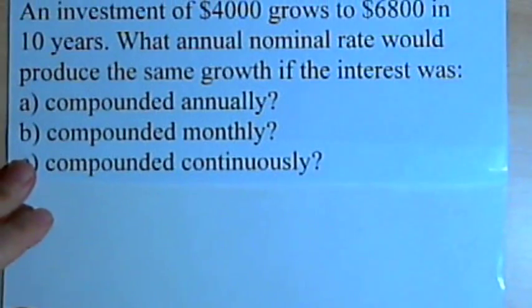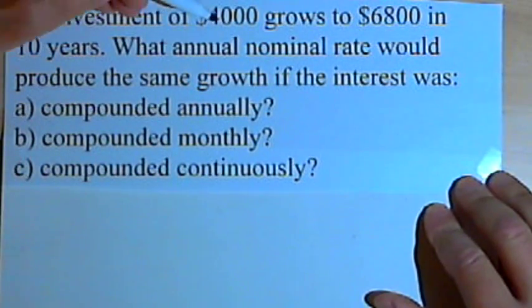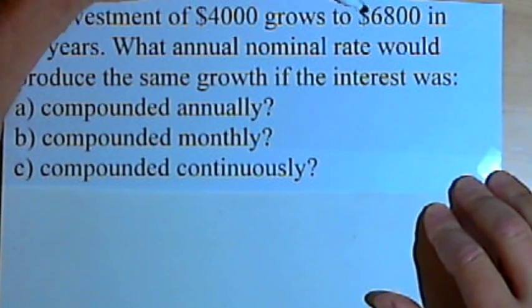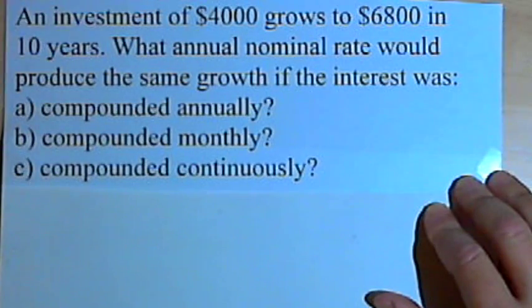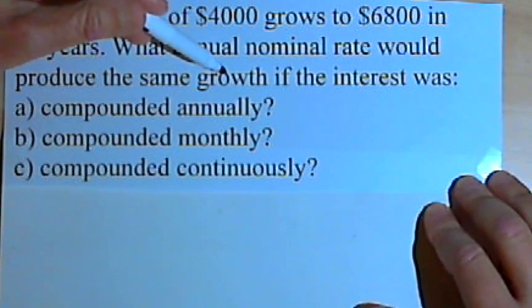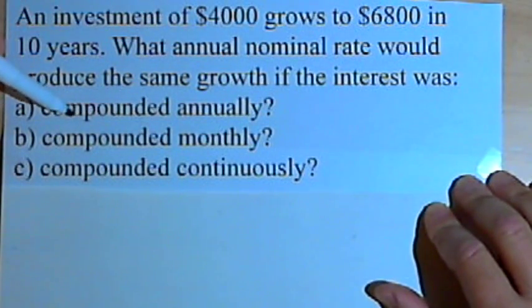Here's our problem. It says an investment of $4,000 grows to $6,800 in 10 years. What annual nominal rate would produce the same growth if the interest was compounded annually, compounded monthly, or compounded continuously?